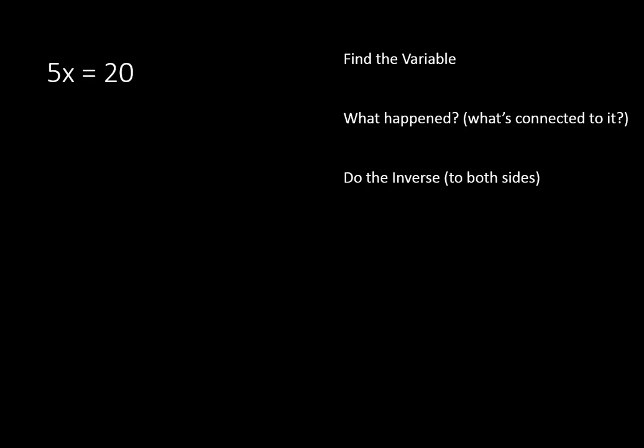Step number one is to find our variable. The variable is the letter inside the equation. In this case, it is x. We ask ourselves, what happened to x, or what is connected to x? x is being multiplied times 5. Now I don't like using the symbol x to say multiplied times, but it sort of fits here. We're multiplying times 5. We could also write that out. It's multiplied times 5.